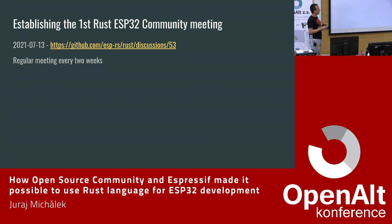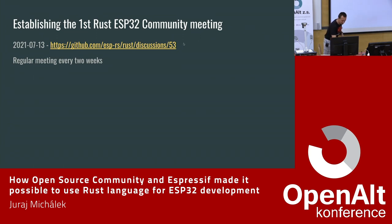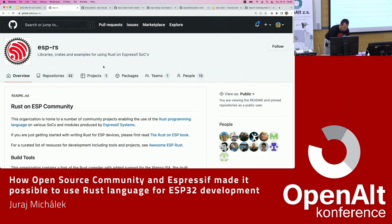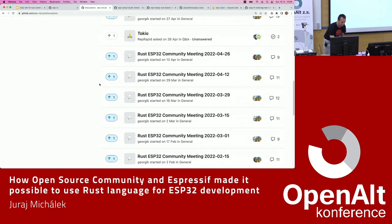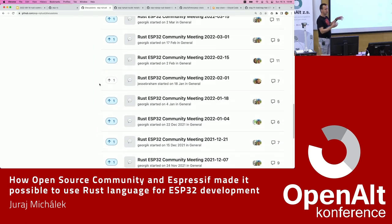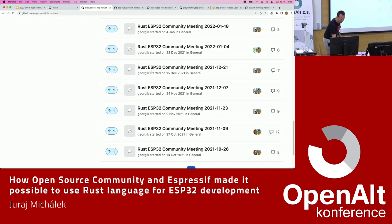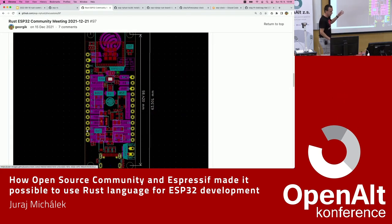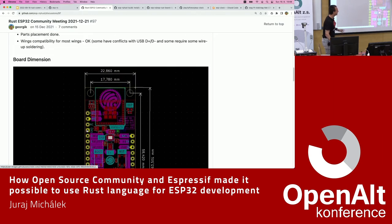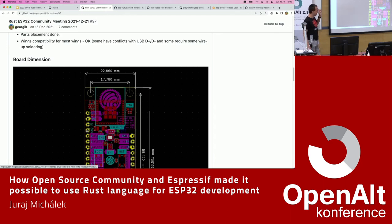We created the Rust community meeting — the first one was in 2021. You can find us at github.com/esprs/rust/discussions. Here you can see the history of how the project was evolving; it's every two weeks, full of updates on what was done and what the community contributed. You can even see the design of the Rust board, which is interesting to mention.